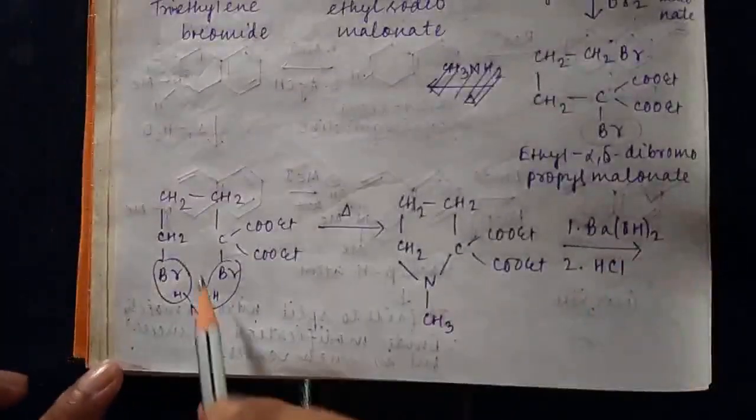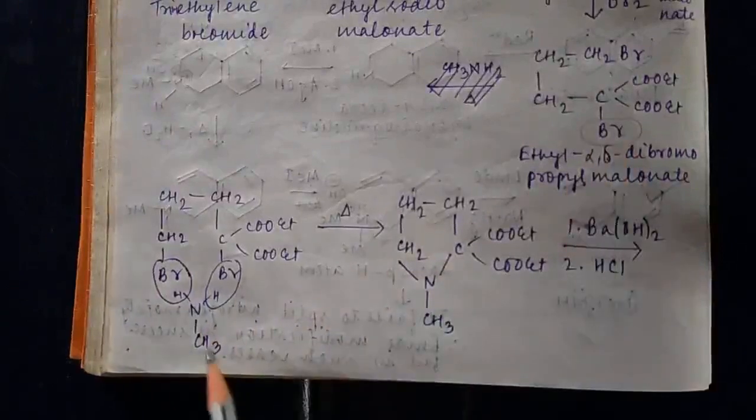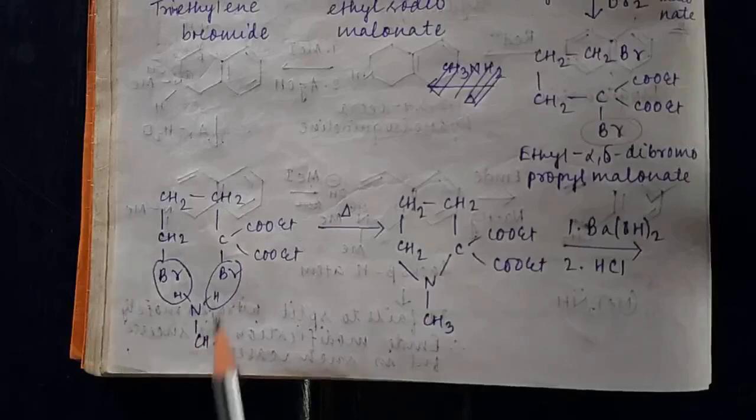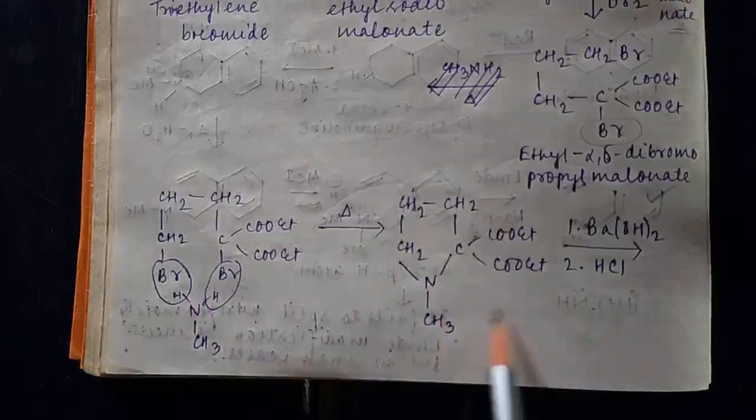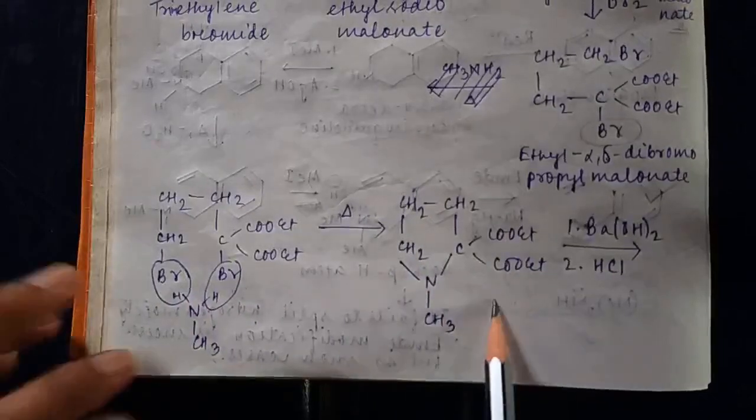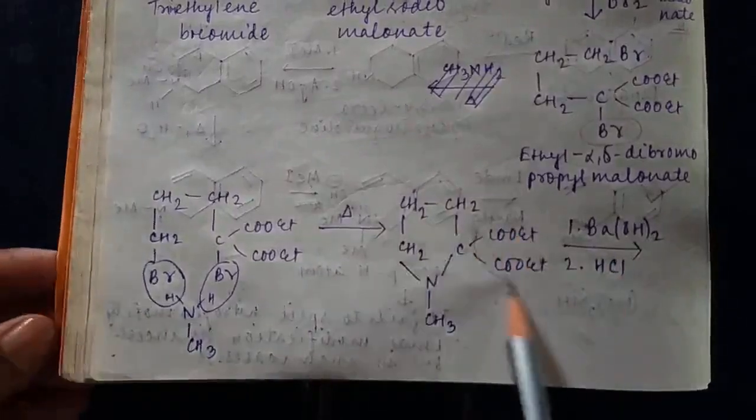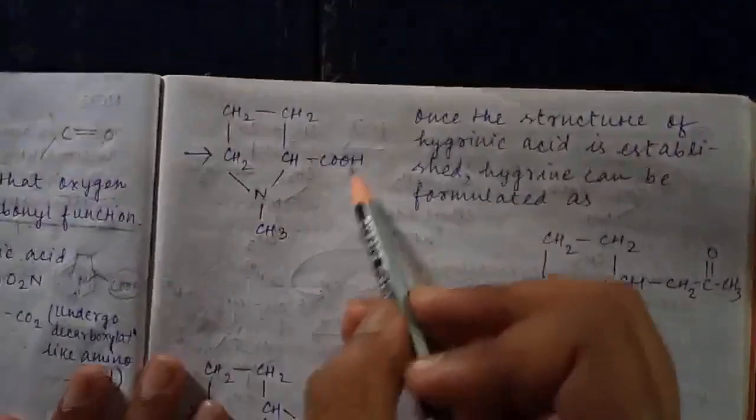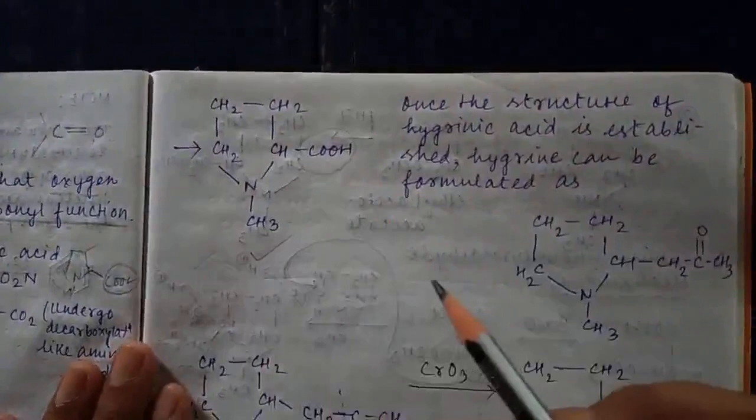The reaction is rearranged to make it clearer. Then we treat it with amine, and the resulting structure is formed. This resulting structure is hydrolyzed, so this part converts into COOH. This is the structure of hygrinic acid.